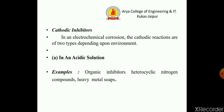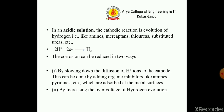Next is cathodic inhibitors. In electrochemical corrosion, the cathodic reactions are of two types depending upon the environment. In acidic solution, organic inhibitors such as heterocyclic nitrogen compounds and heavy metal soaps are used. The cathodic reaction in acidic solution is the evolution of hydrogen — inhibitors like amines, mercaptans, thiourea, and substituted urea are used.